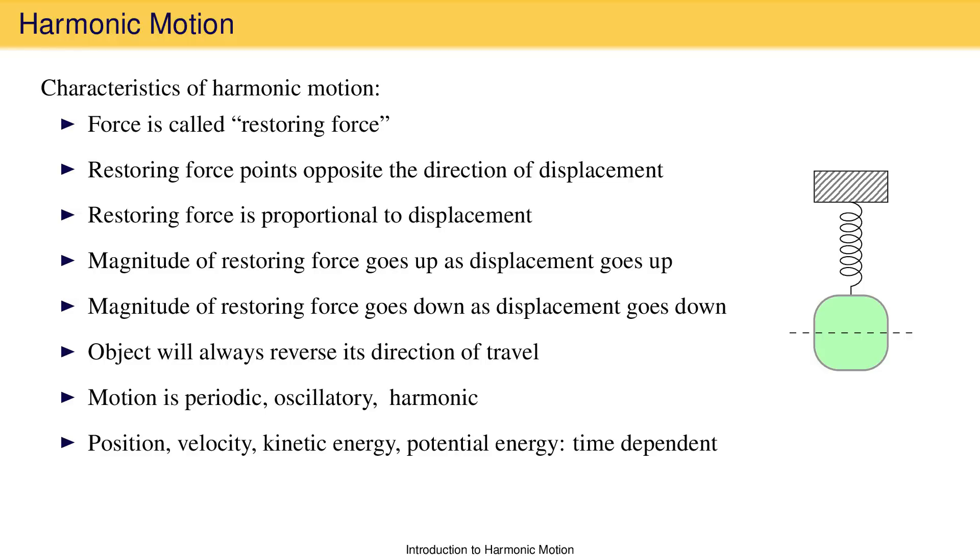Velocity is large near the equilibrium position and smaller when displacement is large. If the system is conservative such that there are no dissipative forces, kinetic energy and potential energy must always sum to one number, the total energy at the start of the object's motion.